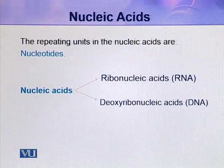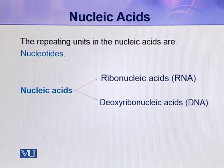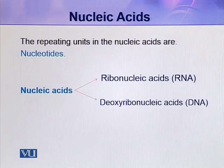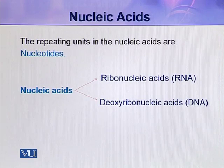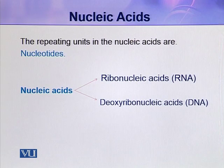Nucleic acids are mainly of two types: ribonucleic acids and deoxyribonucleic acids. Ribonucleic acid is abbreviated as RNA, while deoxyribonucleic acid is abbreviated as DNA. There are three types of RNAs: tRNA (transfer RNA), rRNA (ribosomal RNA), and mRNA (messenger RNA). They have a number of functions to perform in the cell, mainly during protein synthesis.